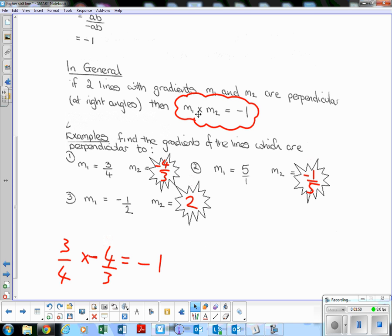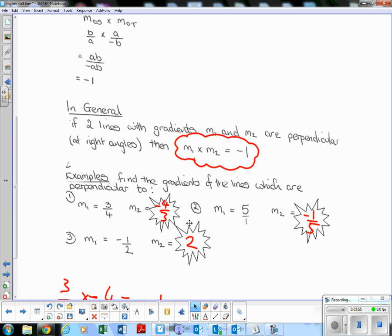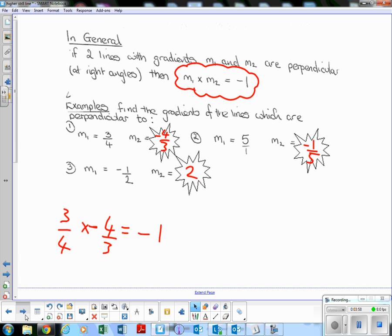So in general, perpendicular gradients, multiply them together, we'll get negative 1. All right, let's have a look at an example using that.